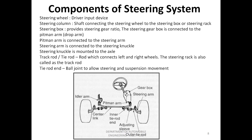Components of the steering system: Steering wheel — it is a driver input device. Steering column — shaft connecting the steering wheel to the steering box or steering rack. Steering box — it provides a steering gear ratio. The steering gearbox is connected to the pitman arm, also known as a drop arm. The pitman arm is connected to the steering arm, which is connected to the steering knuckle. The steering knuckle is mounted to the axle. Track rod or tie rod — a rod which connects the left and right wheels. The steering rack is also called a track rod. The tie rod uses ball joints to allow steering and suspension movement.